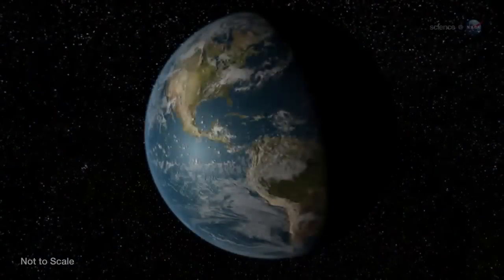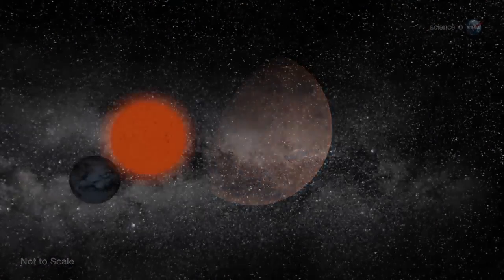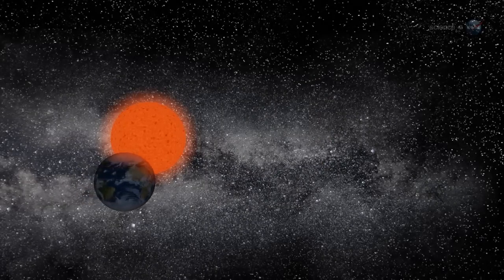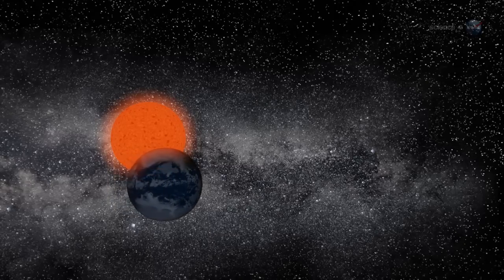Mercury, Venus, Earth, and possibly even Mars could be engulfed. The fate of Earth is not a certainty, however. Some researchers believe that Earth's orbit might spiral outward, keeping the planet at a safe distance from the approaching inferno.